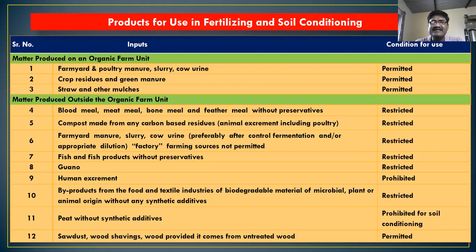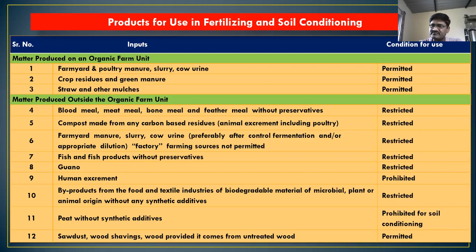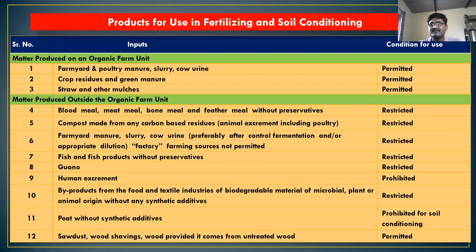The second thing is the matter produced outside the organic farming. Which type of material produced outside the farm — like blood meal, meat meal, bone meal, feather meal without preservation — is restricted. If such meals are not preserved, then such amendments may have partial use, for example 10 to 15% application of such materials is permitted.